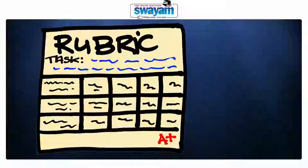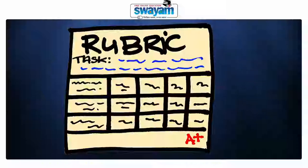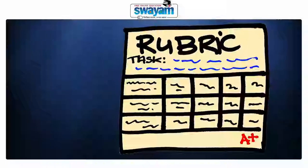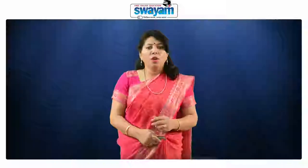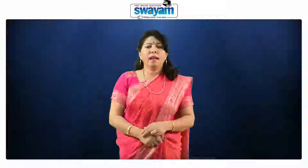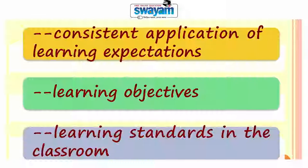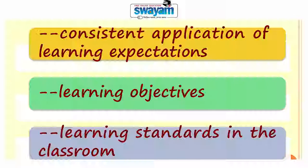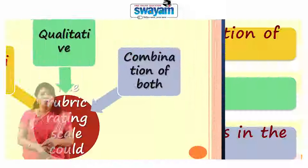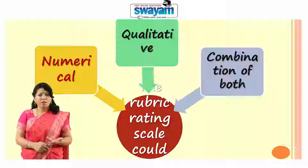A rubric is an evaluation tool or set of guidelines used to promote the consistent application of learning expectations, learning objectives, and learning standards in the classroom. It is a scoring tool used to assess a set of criteria for a particular type of work or performance, and provides more detail rather than a single grade or mark. The rubric rating scale could be numerical, qualitative, or a combination of both.